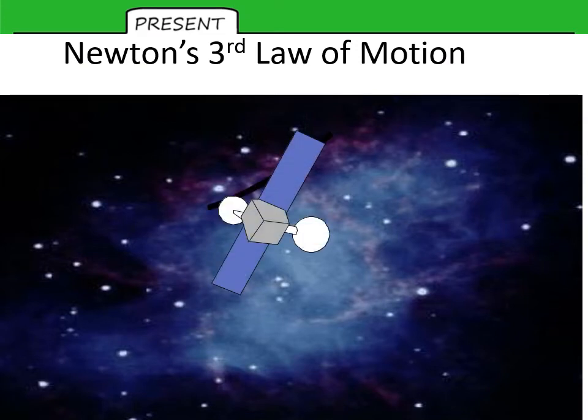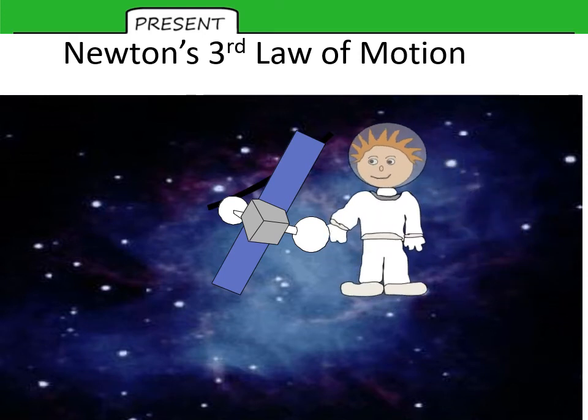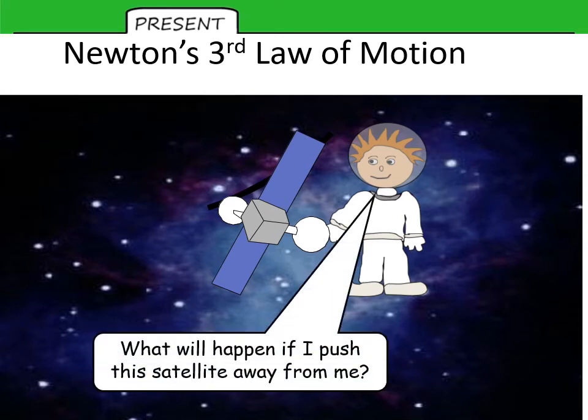So imagine a satellite in space and an astronaut touching it, standing next to it. Now, if he is to push the satellite away from him, what is going to happen? Well, the satellite will be pushed to the left, and he will be pushed to the right. Now depending on the relative masses, which one's bigger, which one's heavier, one of them will move faster than the other. The lighter object will move the fastest, the heavier object will move the slowest. But both of them will have the same force, left and right.